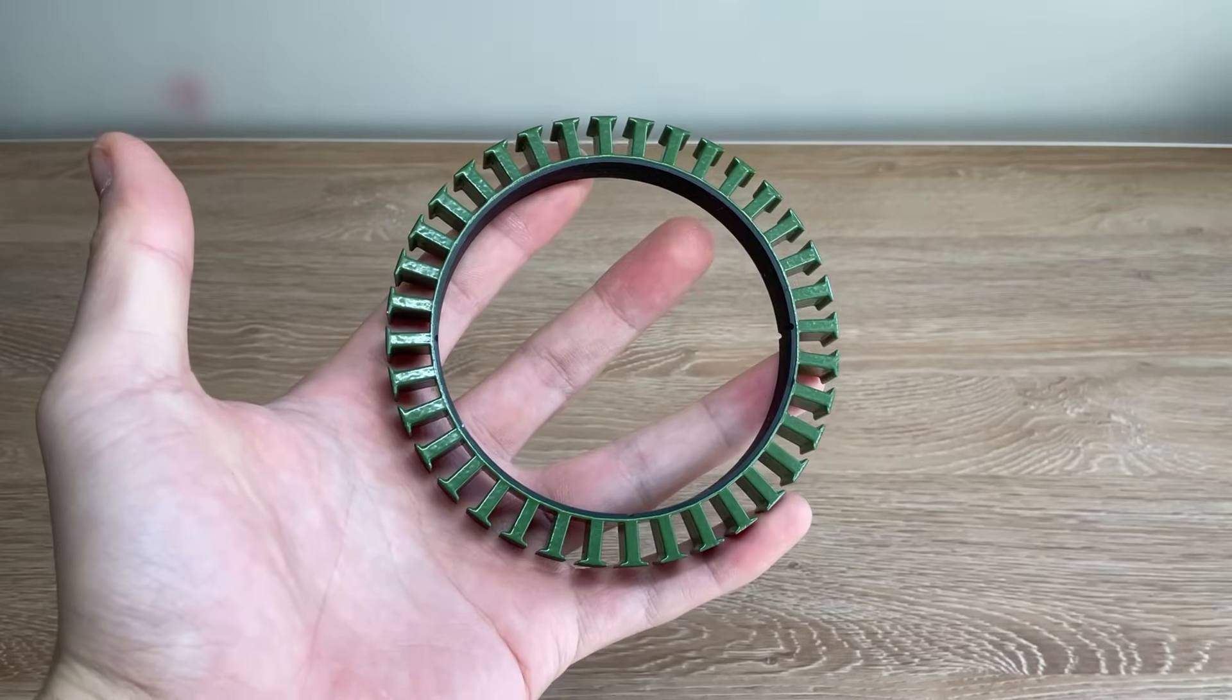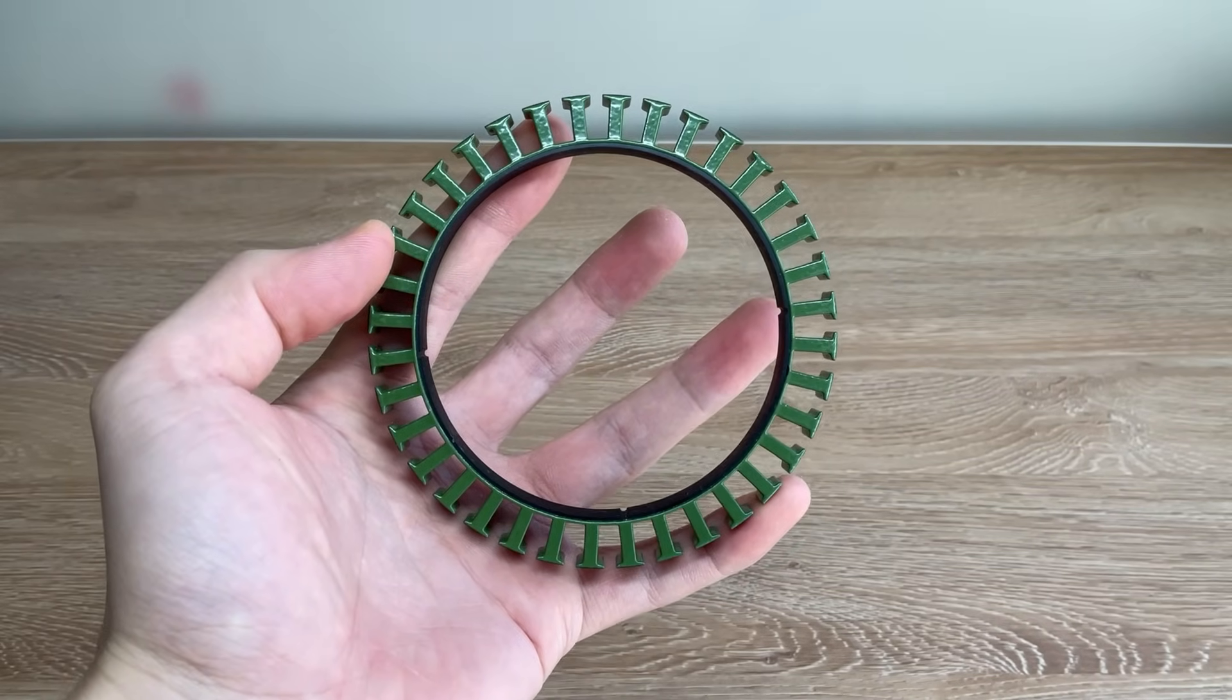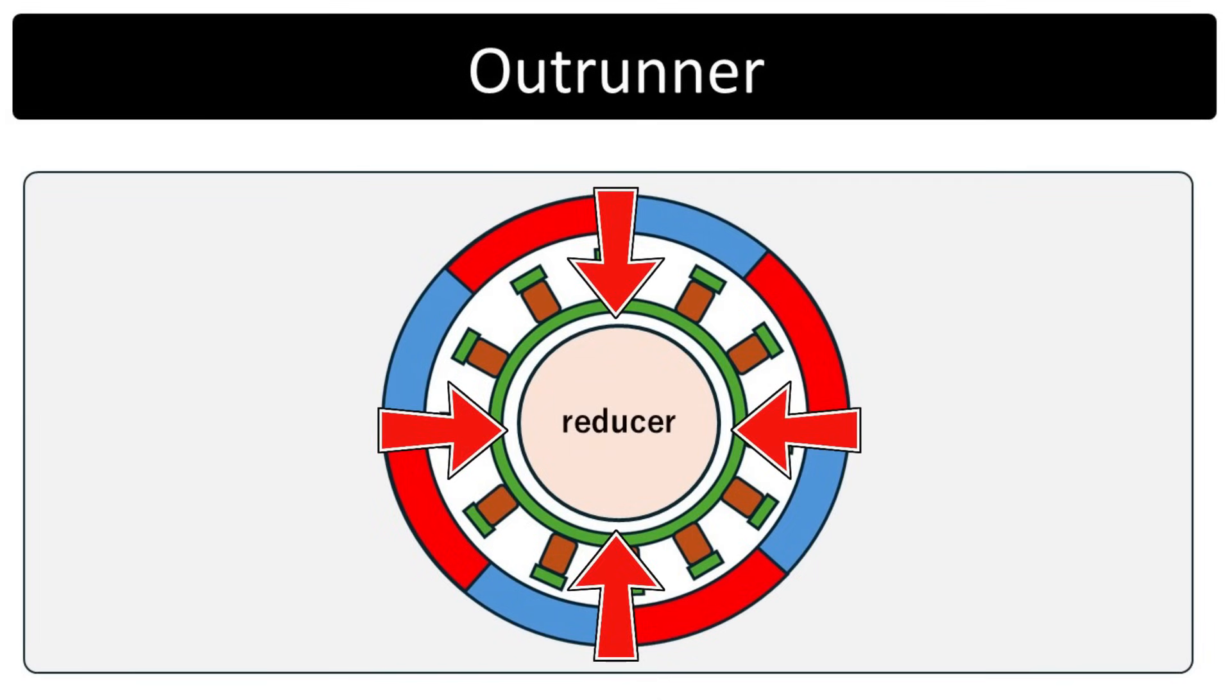Another advantage of an outrunner design is the large space in the center of the stator. By placing a reducer in that space, you can create a compact actuator that also delivers high torque.